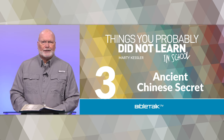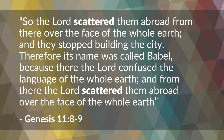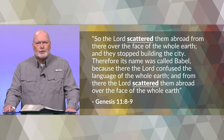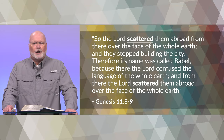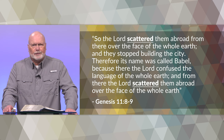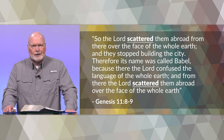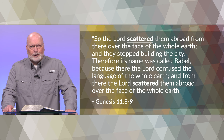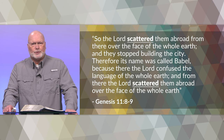Let's start with Genesis chapter 11, verses 8 and 9: 'So the Lord scattered them abroad from there over the face of the whole earth, and they stopped building the city. Therefore its name is called Babel, because there the Lord confused the language of the whole earth and from there the Lord scattered them abroad.' This is following the flood when all the people had gathered in one spot and were building a tower up to heaven, and God confused their languages to scatter them.